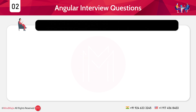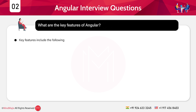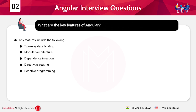The second question: What are the key features of Angular? Mention the important features. Some of the important features of Angular are: two-way data binding, modular architecture, dependency injection, directives, routing, and reactive programming. Feel free to expand on each and every feature when you are facing the interviewer to have that edge.